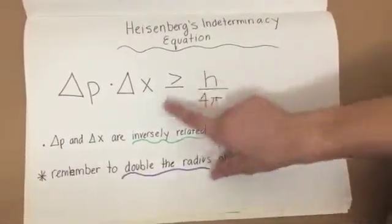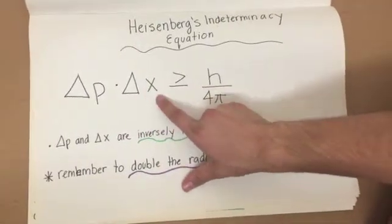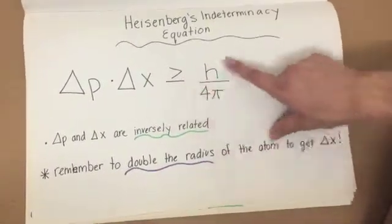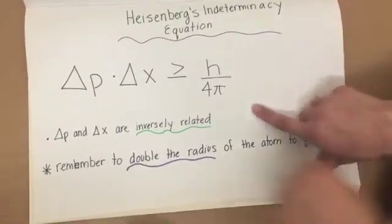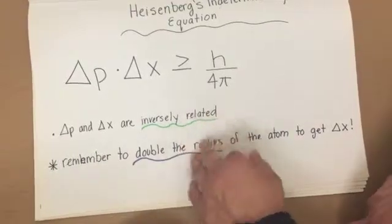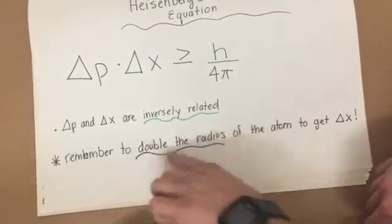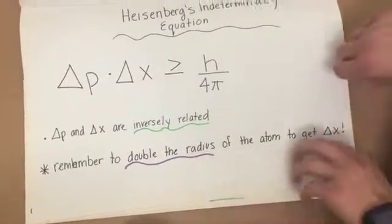Heisenberg's uncertainty equation is the uncertainty in momentum times the uncertainty in position must be greater than or equal to Planck's constant divided by 4 pi. Delta p and delta x are inversely related. The more certain you are of one, the less certain you can be of the other. Remember to double the radius of the atom to get delta x.